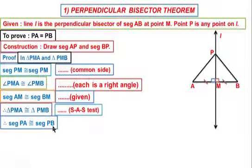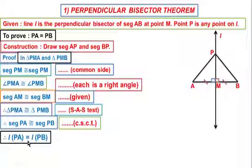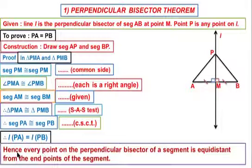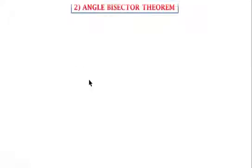Therefore segment PA is congruent to segment PB — corresponding sides of congruent triangles. Hence length of PA equals length of PB, meaning PA = PB. Hence every point on the perpendicular bisector of a segment is equidistant from the endpoints of the segment.